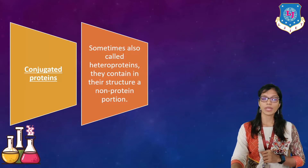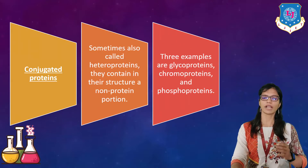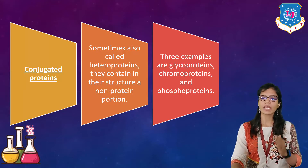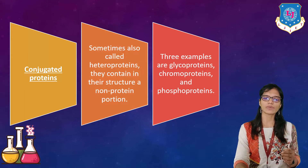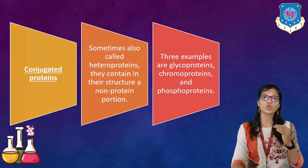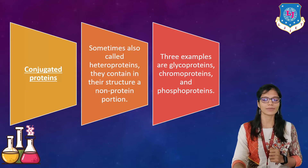Three examples of conjugated proteins are: glycoproteins, chromoproteins, and phosphoproteins. These three are known as conjugated proteins or heteroproteins.